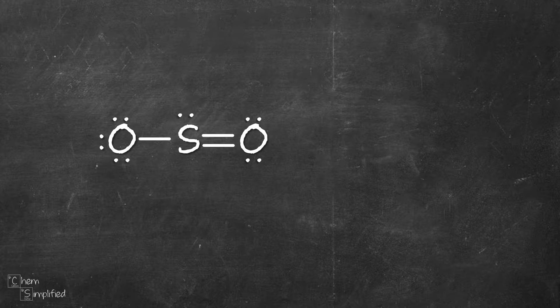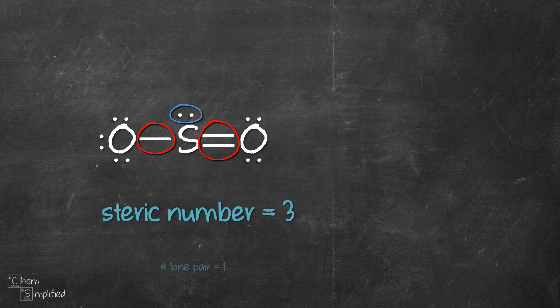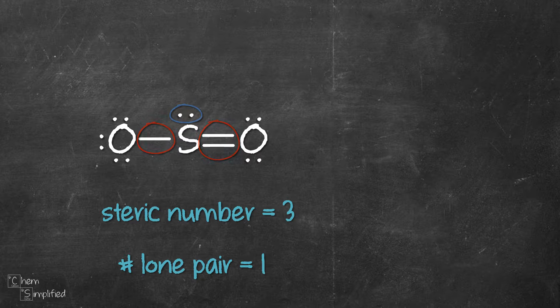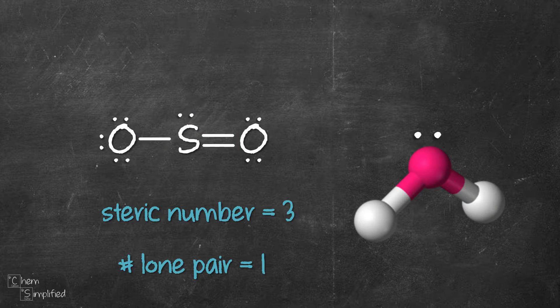Moving on to SO2, S is the central atom. There are two groups and one lone pair connected to it, so the steric number is 3. The two groups and lone pair will arrange themselves to look like this. Imagine that you have three groups like in the triangular shape, but one of the groups is replaced with a lone pair, and that's exactly what this shape is.